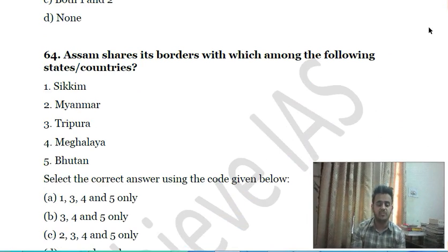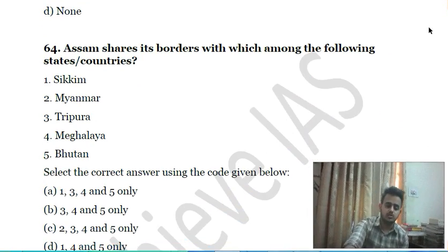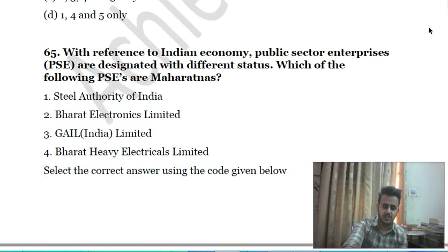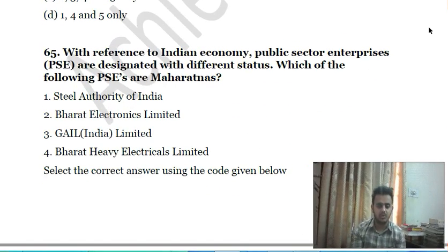Sixty-third question: Assam shares borders with which of the following states and countries? First, Arunachal Pradesh; second, Myanmar; third, Nagaland; fourth, Meghalaya; fifth, Bhutan. Choose the correct answer.